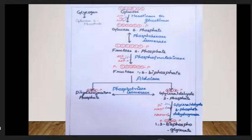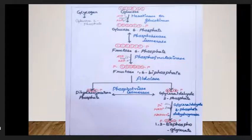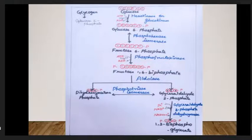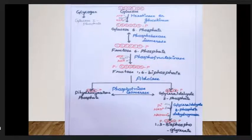In the hexokinase reaction, ATP is used to convert glucose to glucose-6-phosphate. Glucose-6-phosphate then undergoes isomerization — isomerization means the same chemical formula but a different molecular structure.